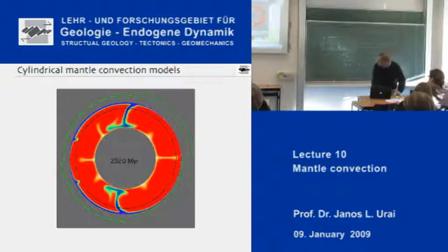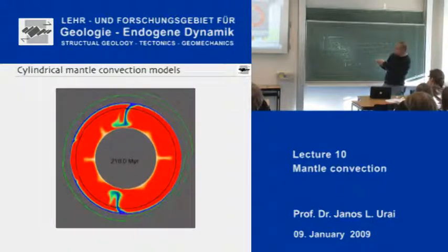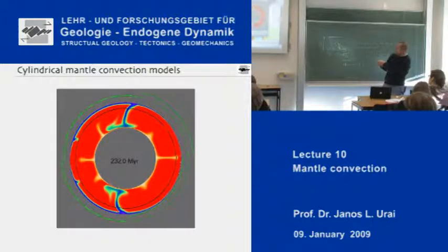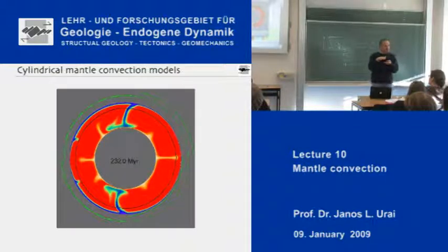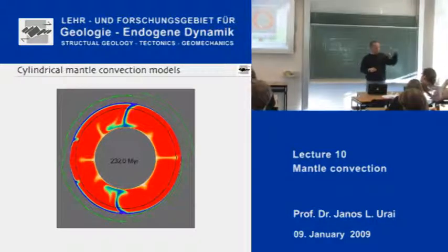But it's also shown in this simulation that there is a certain amount of discontinuity. Can you see that this sinking material — this sinking slab — actually changes angle and stays a little bit at this contact? And this is one of those mantle discontinuities where probably the viscosity and the density are changing, so the convection is influenced by this.